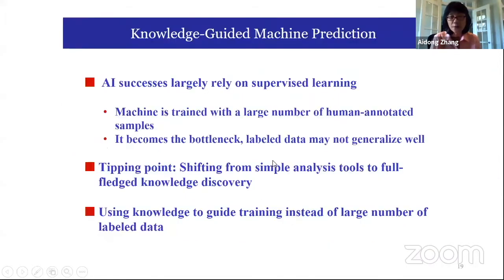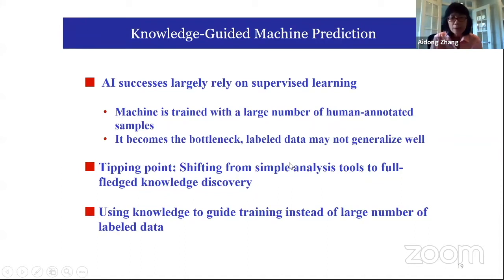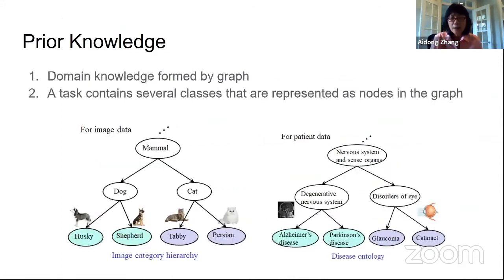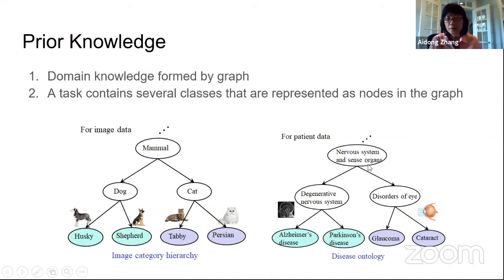We started looking further at how prior knowledge can be used for prediction and examining different kinds of knowledge in the bioinformatics domain. You can combine this knowledge in a graph. For image data, you can organize into hierarchical categories. For patient data, you can organize into different diseases — very useful for utilizing domain knowledge.